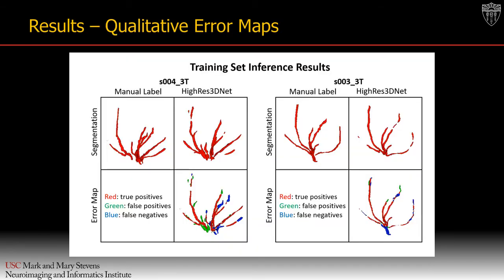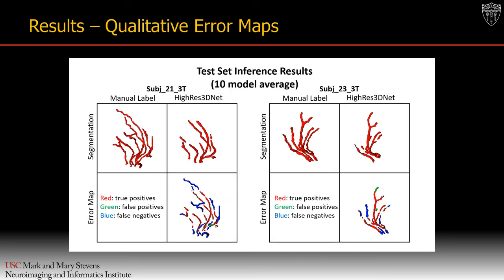These are examples of the segmentation results using 10-fold validated high-res 3D net from the training set. We can see how the automated segmentation can correctly identify most portions of the vessels, although there are some disagreements with manual segmentations about the distal portions of the LSAs. Results from the test group never seen by the model during training also generally agree well with manual labeling, though some disagreement regarding the distal portion of the vessels remains.